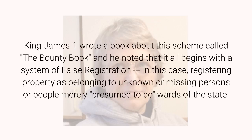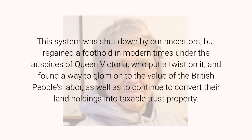King James Chapter 1 wrote a book about this scheme called The Bounty Book, and he noted that it all begins with a system of false registration — in this case, registering property as belonging to unknown or missing persons or people merely wards of the state. This system was shut down by our ancestors, but regained a foothold in modern times under the auspices of Queen Victoria, who put a twist on it and found a way to glom onto the value of the British people's labor, as well as to continue to convert their land holdings into taxable trust property.